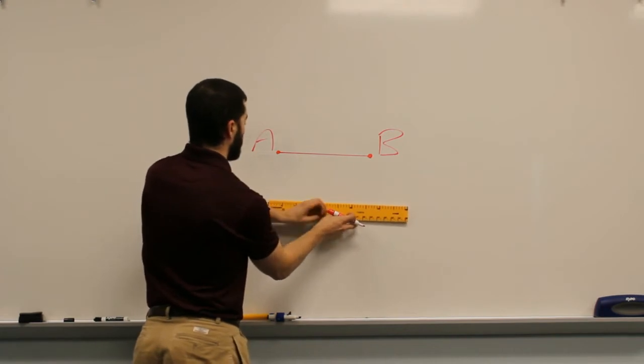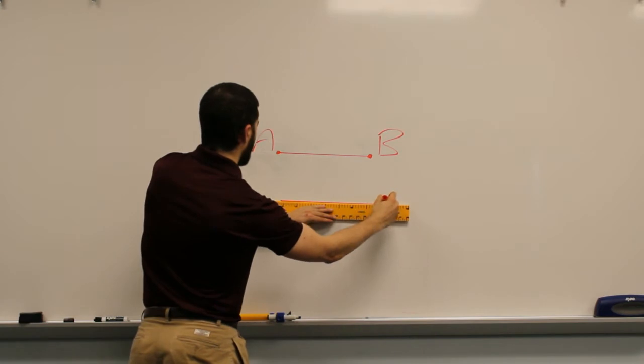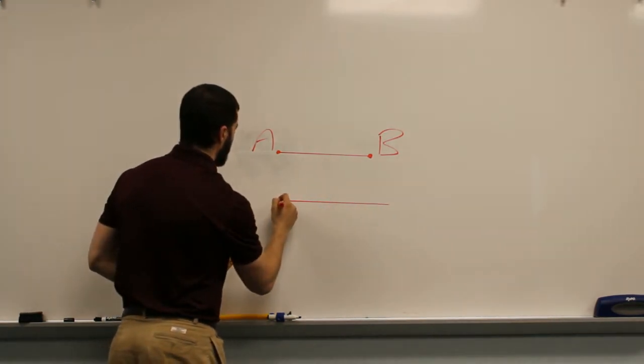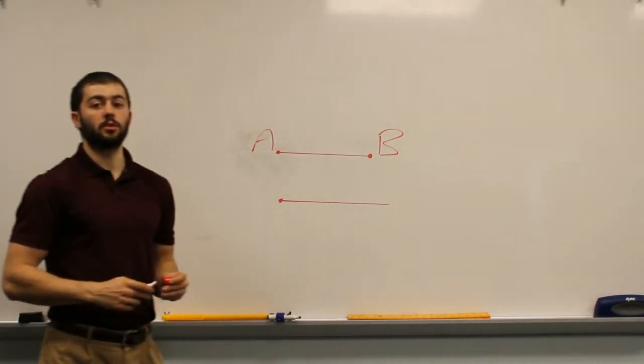So we can go ahead and somewhere below line segment AB here we can draw ourselves a new ray, and from here we're going to need to use our compass.